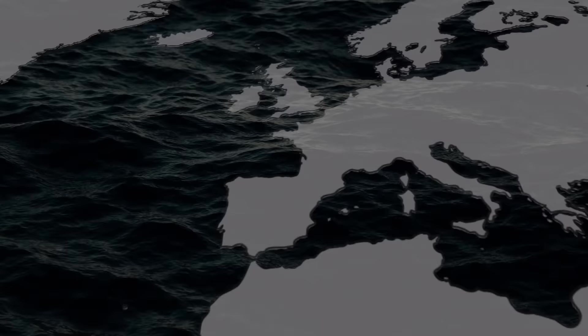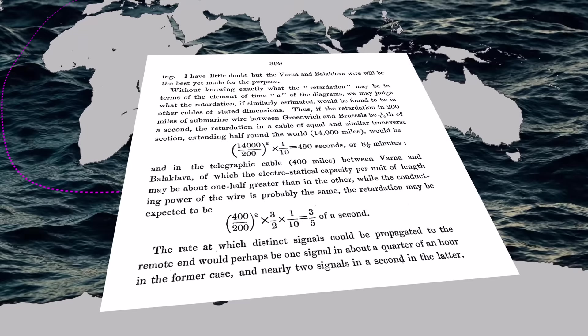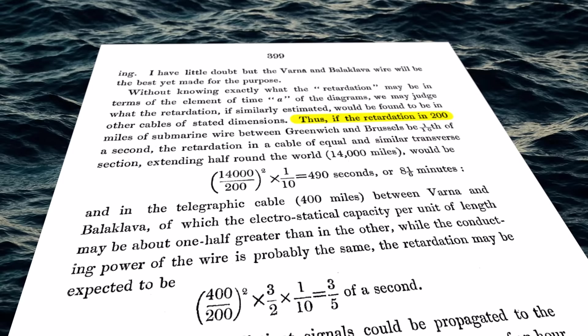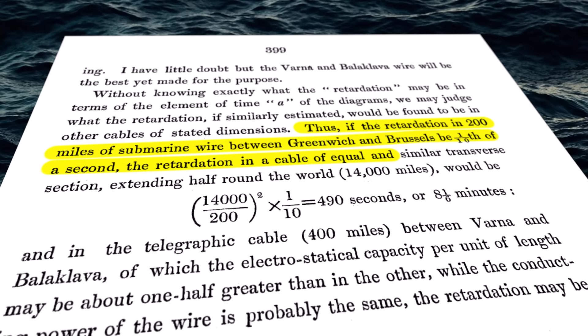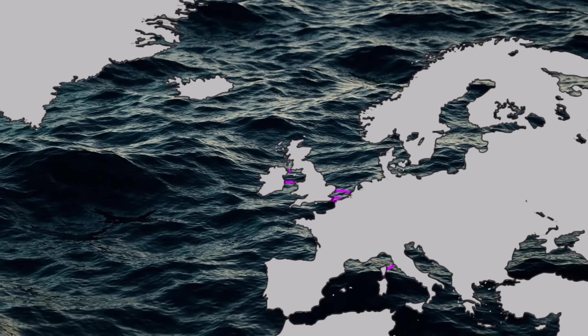To elaborate his point, Thomson gives the hypothetical example of a telegraph cable stretching 14,000 miles, which is halfway around the globe. Based on the same observed time to peak as the Greenwich Brussels cable, a telegrapher would need to leave at least 8 minutes between transmissions. Fortunately, the transatlantic cable is only 2,000 miles in length, so based on Thomson's predictions, 10 seconds or so would be needed between pulses.